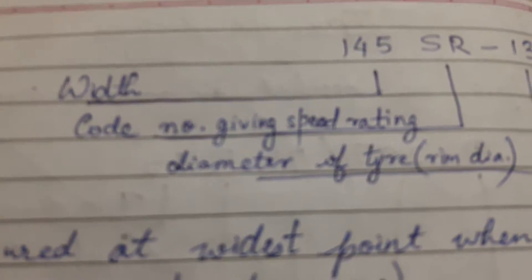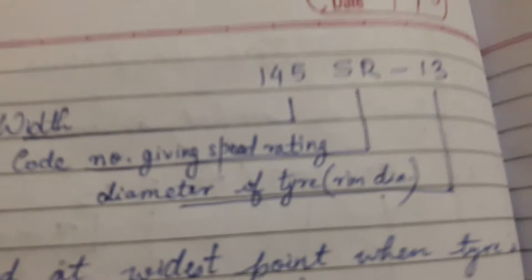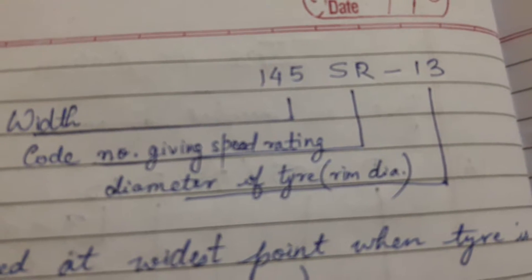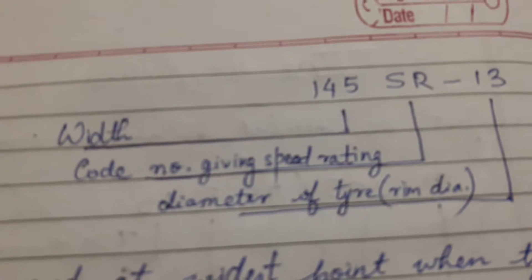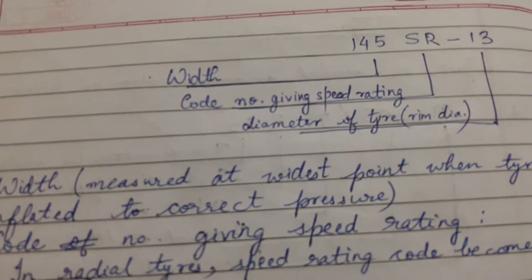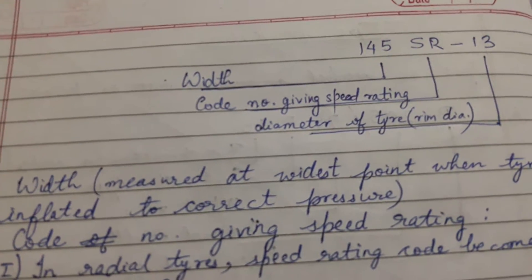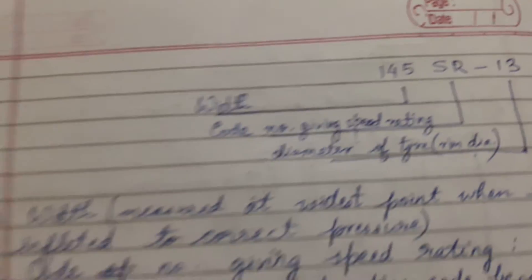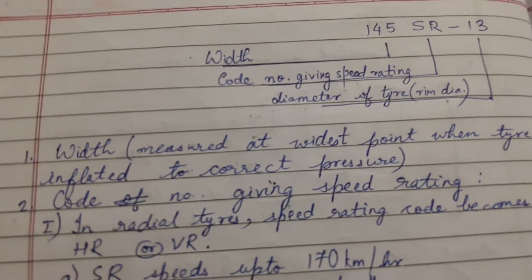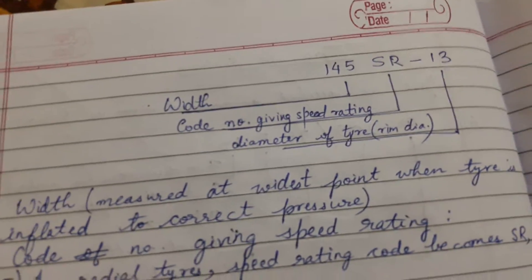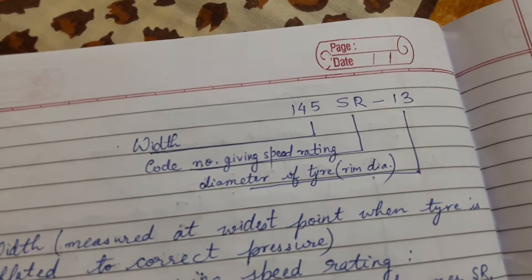Another way of specifying the tire is given here with an example. The first is 145 SR 13. The first part, 145, is the width — specifically the sectional width, which is the widest point when the tire is inflated to the correct pressure.